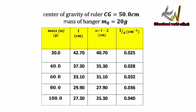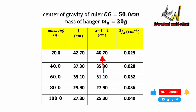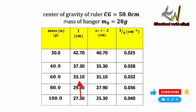Now for our table of values: the center of gravity of the ruler is at the 50 cm mark, and the mass of the mass hanger is 20 grams. When m = 20g, the value of L is 42.70 cm; x = L − 2 = 40.7 cm; and the inverse of x is 0.025 per cm. When m = 40g, L = 37.3 cm, x = 35.3 cm, and the inverse of x is 0.028 per cm.